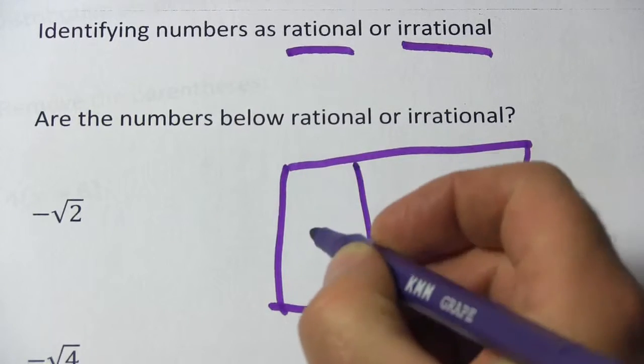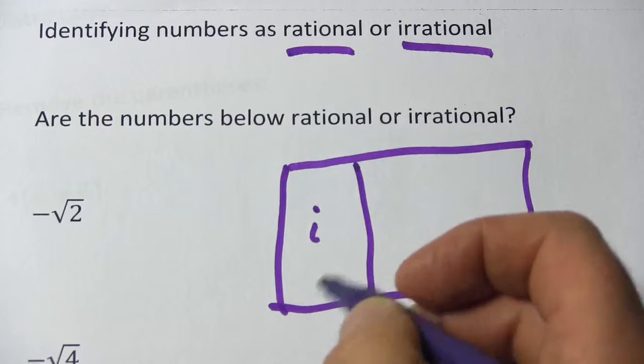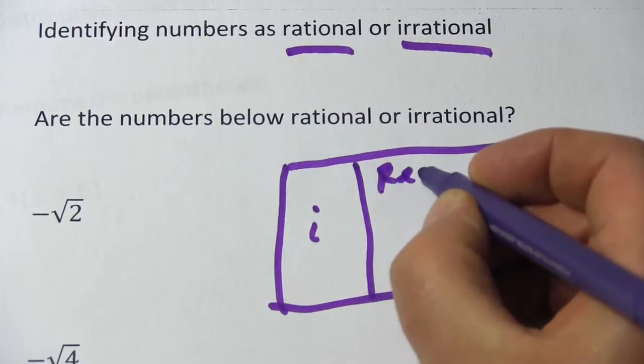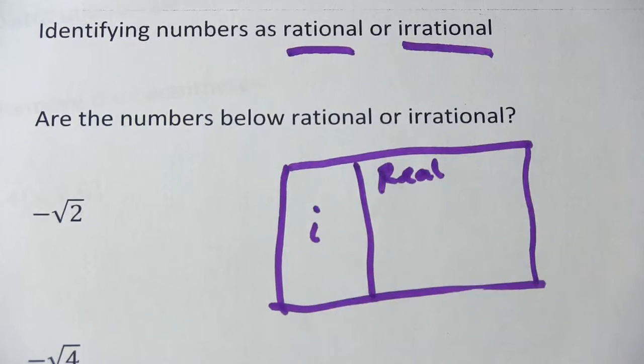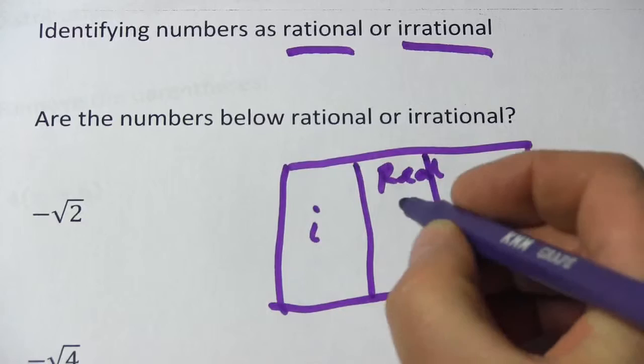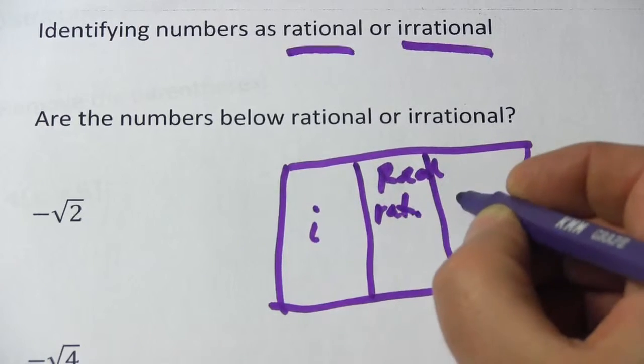First of all, there are imaginary numbers, and those are strange creatures. The other side of this is real numbers, and that's mainly what we're concerned about. And real numbers are divided into rational and irrational.